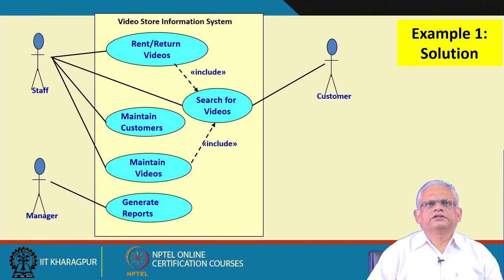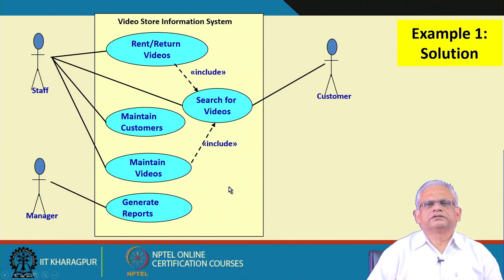With this we will stop here and continue in the next lecture with more examples. This diagram is a large part of the use case model, but we also need a systematic text description to accompany it — the diagram does not convey all information, which will be noted down in a text description. We will stop here and continue in the next lecture. Thank you.